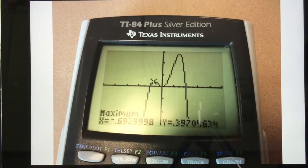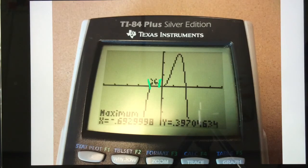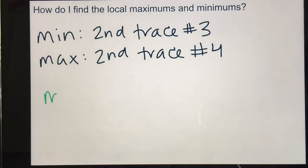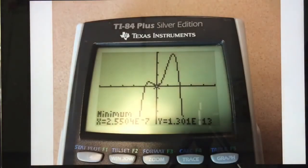So first, I did the first little maximum, second trace number 4, left bound, right bound. And I got the point negative 0.693, positive 0.397. So I'm just rounding those numbers, cutting it off after the 2. The 2 is followed by a 9, so it rounds it up to 3.